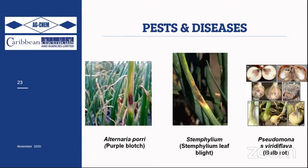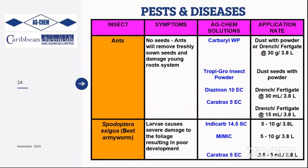Regarding insect pests, ants are a common problem — they remove seeds after sowing or feed on young transplant roots. Effective solutions include dusting seeds with Karate, drenching or fertigating the area before seeding with Karate or Tropical Insect Powder, or using Indoxacarb or Cartap, both of which can be drenched or fertigated for effective ant control.